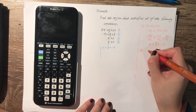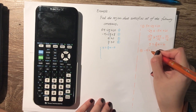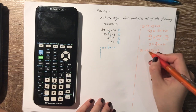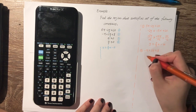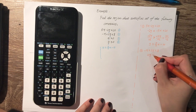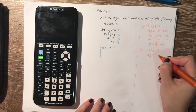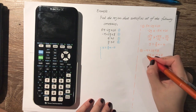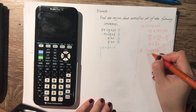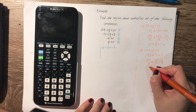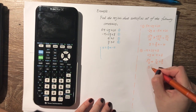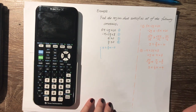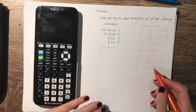The second one: negative x plus 2y is less than or equal to 8. Moving negative x to the right gives 2y ≤ x plus 8. Dividing both sides by 2 gives y ≤ one-half x plus 4.